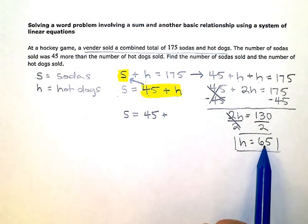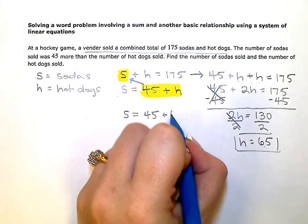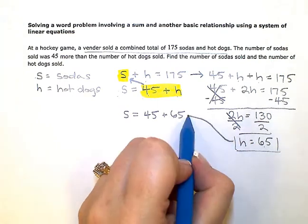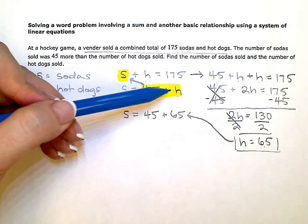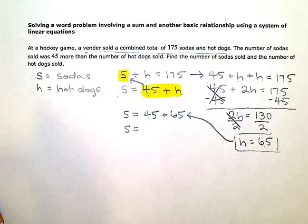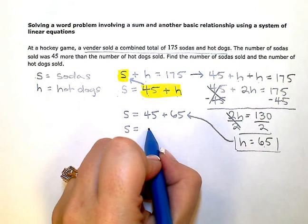Well, I know that H is 65. So I'll just take this 65 and substitute it in there where this H was. So the sodas is equal to 45 plus 65, which is 110.